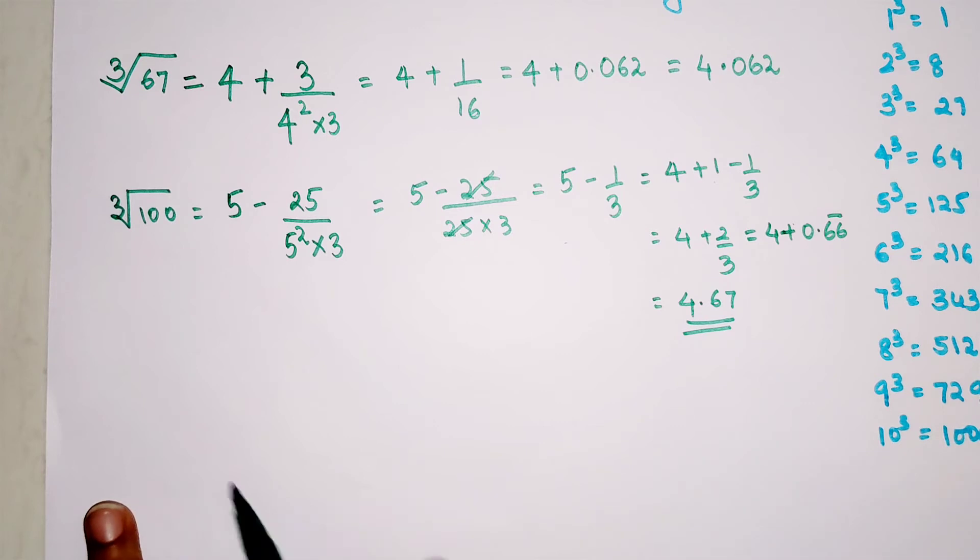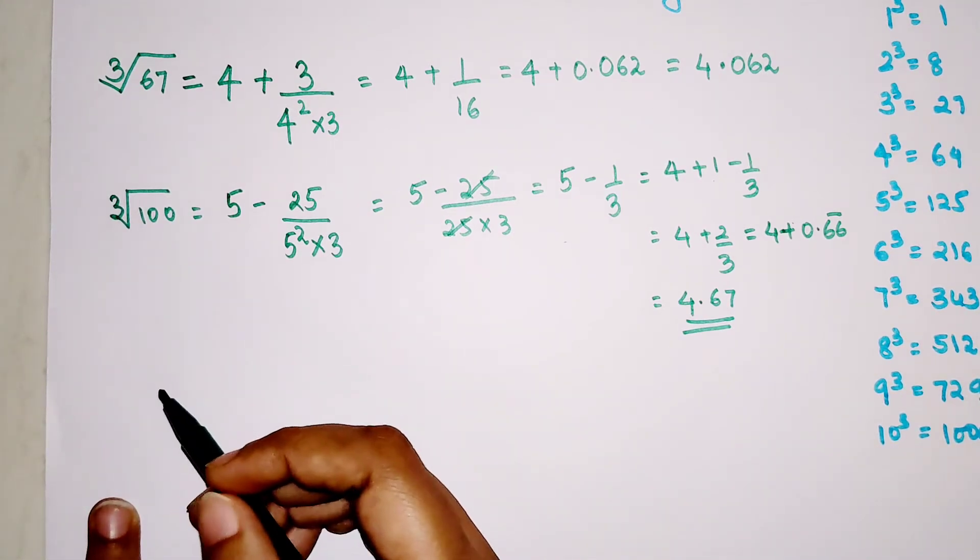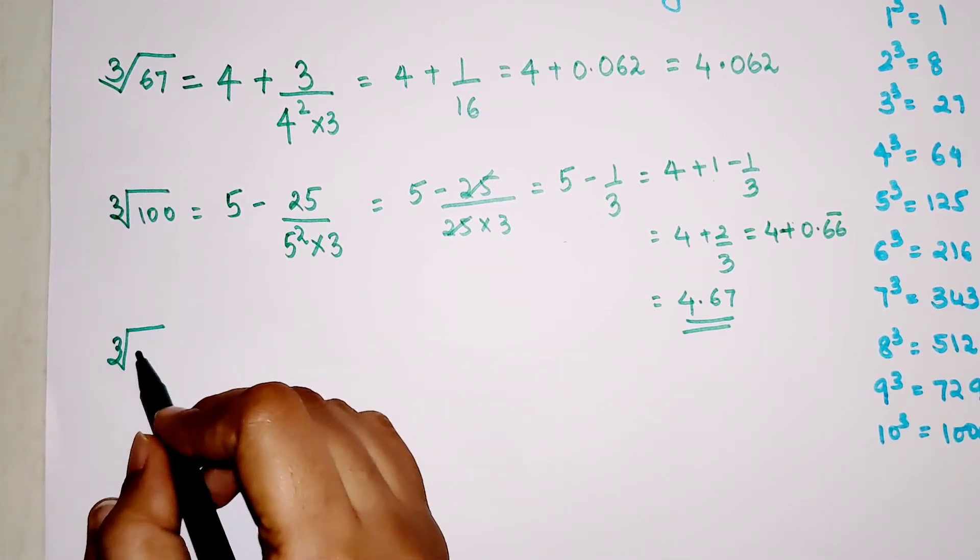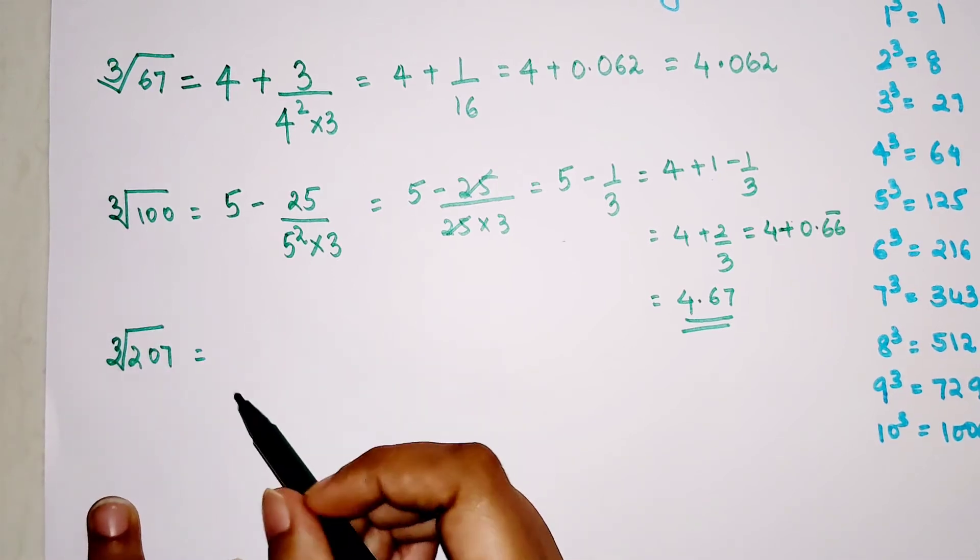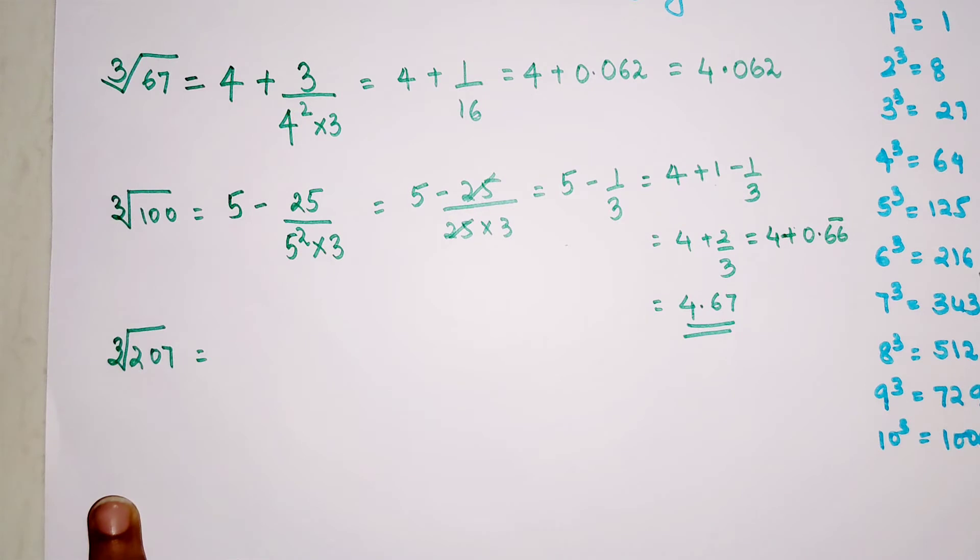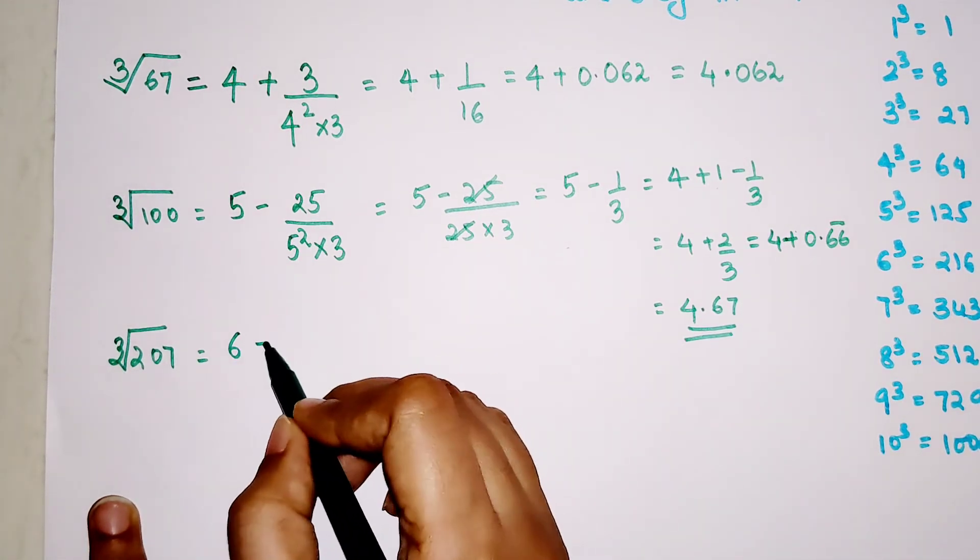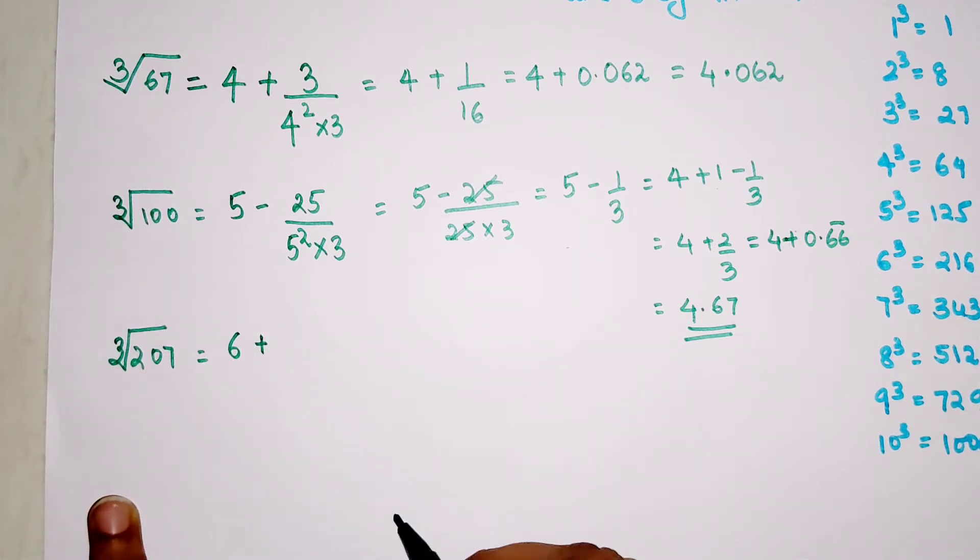Now let's look at a slightly bigger number which is 207. I can say that 207 is very close to 6 cubed, which is 216. So 6 minus—sorry, 6 plus—no, my bad, 209 minus... 216 minus 207 gives you minus 9.